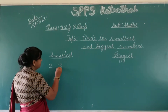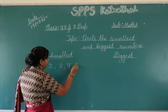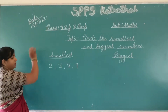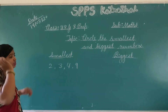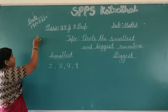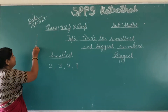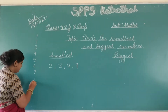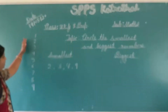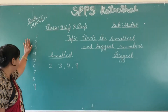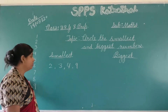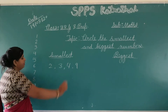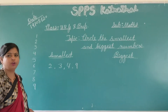2, 3, 4 and 9. These are 4 numbers. We need to know the smallest and biggest. We learn the smallest number: 1, 2, 3, 4, 5, 6, 7, 8 and 9. So, we learn the smallest number.